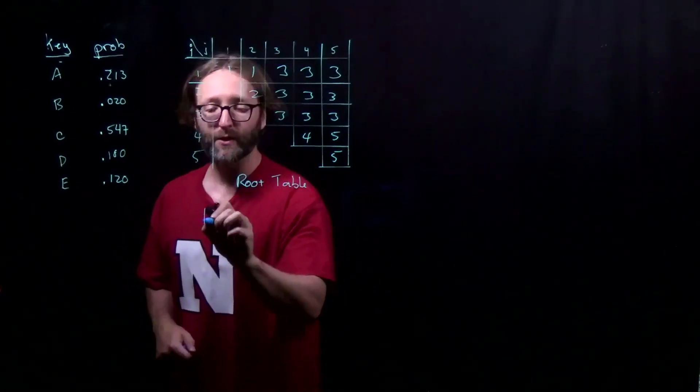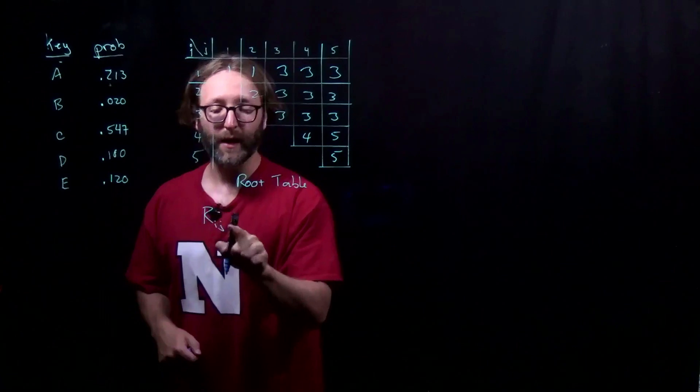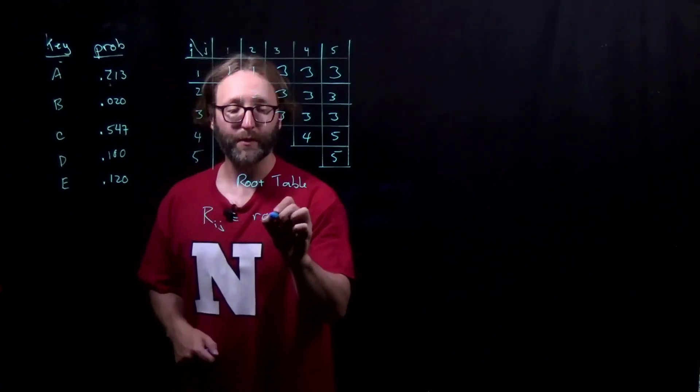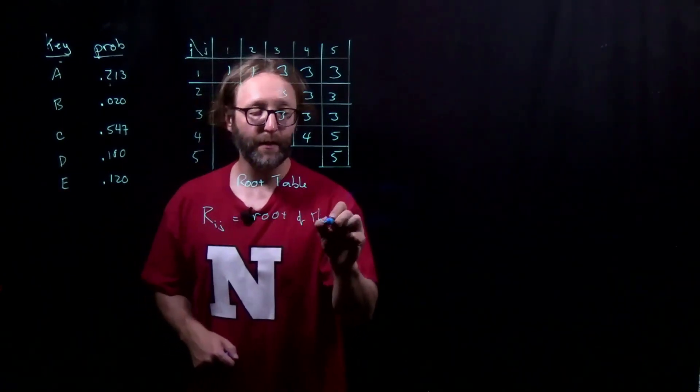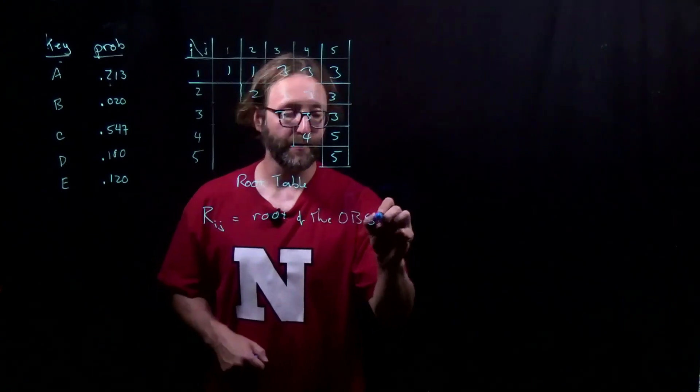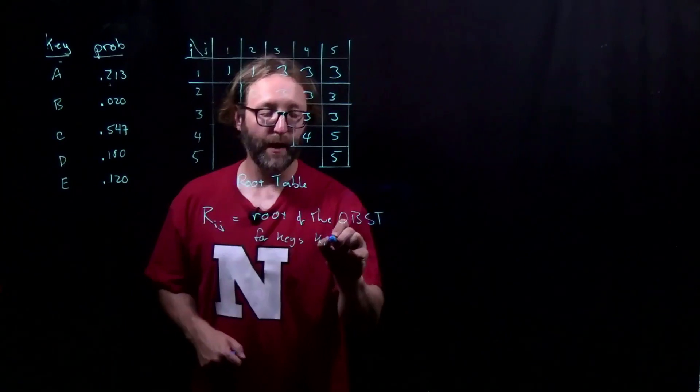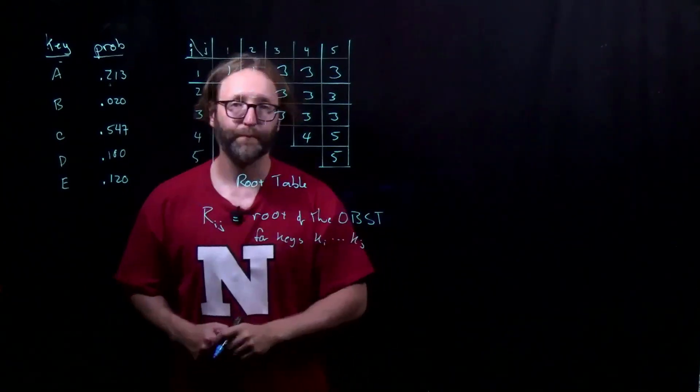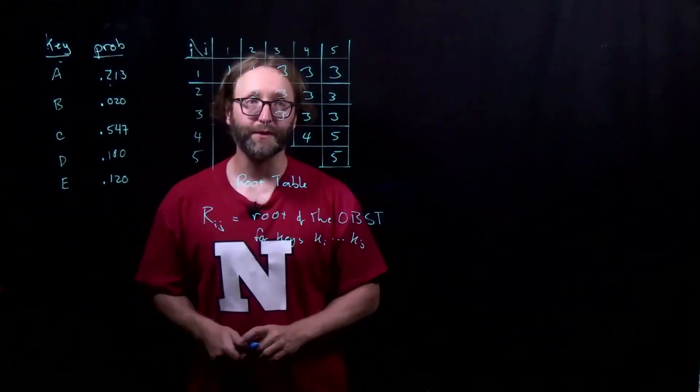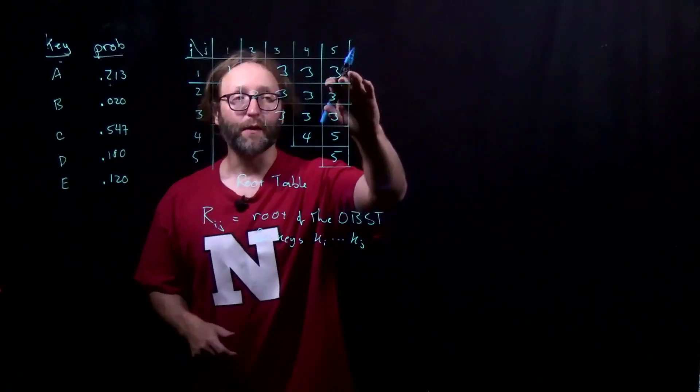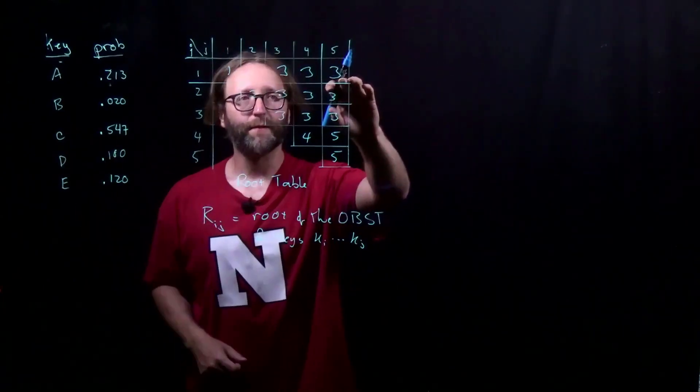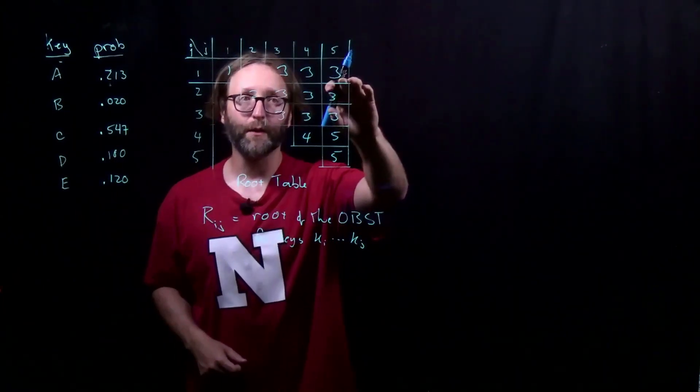Remember the interpretation here is that r sub ij is the root of the optimal binary search tree for keys ki through kj. In our last computation in the previous example, 3 or c was the value of l that gave us the minimum value.